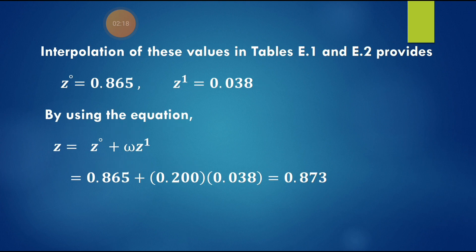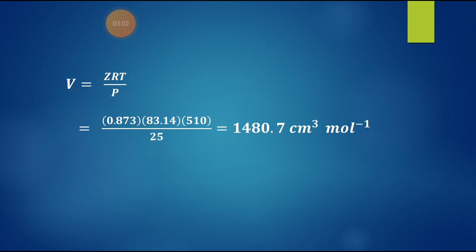Using Tr and Pr with interpolation from Tables E1 and E2 in Smith and Van Ness, we get Z⁰ = 0.865 and Z' = 0.038. Applying Z = Z⁰ + ω·Z' gives Z = 0.865 + 0.200 × 0.038 = 0.873. The molar volume is then V = ZRT/P = 0.873 × 83.14 × 510 / 25 = 1480.7 cm³/mol.